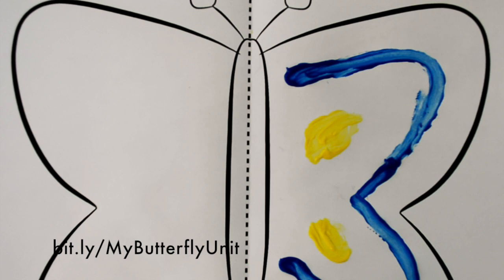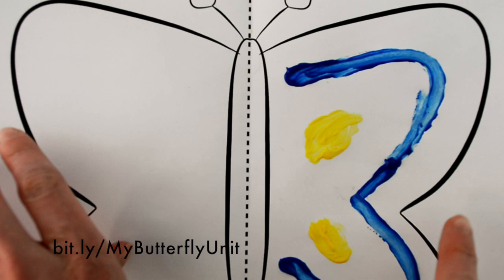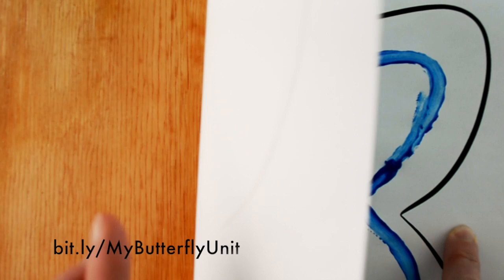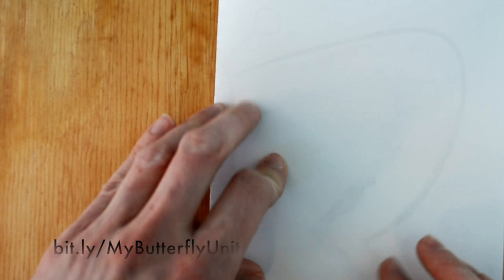So now I'm going to add a little yellow. Alright, so not super creative. I'm sure your kids will do much better. But now what I need to do is I need to take this and pretty quickly I need to fold it over. You also want to tell your kids that they kind of need to press down on this side so that it transfers.